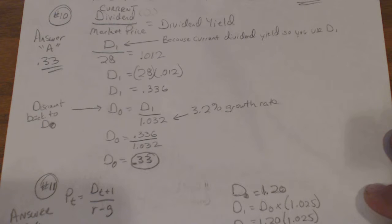So that is the current dividend. They want you to find the last dividend. Well, they tell you the growth rate is 1.032, so you just take D1 divided by 1.032 because you're discounting back, so it's one plus the rate of growth.